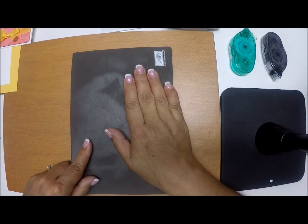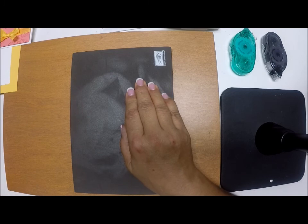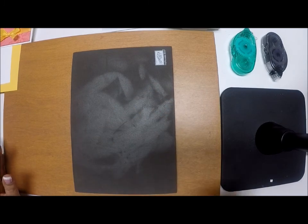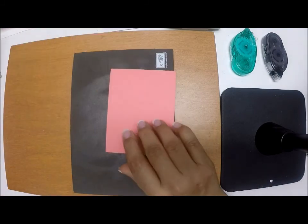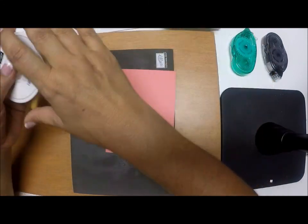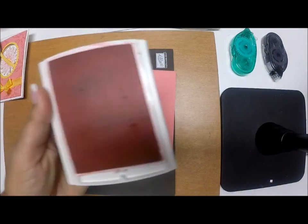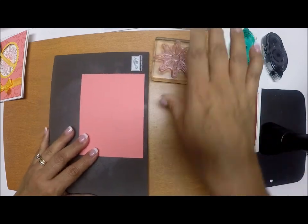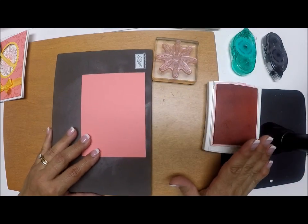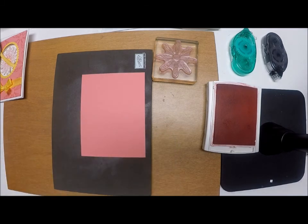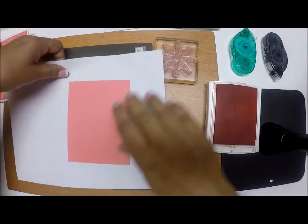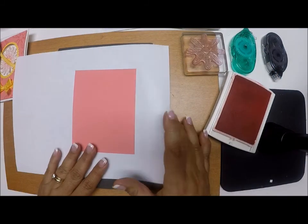And because our stamps are photopolymer, we are going to use our pierced mat to get a nice crisp image. So the first thing we're going to do is stamp our background. I just randomly stamped the daisy using Flirty Flamingo onto Flirty Flamingo. And I just want to grab a piece of scrap paper. Because I'm going to be stamping off, I wanted to protect my pierced mat.